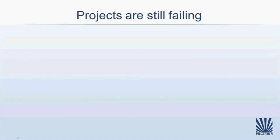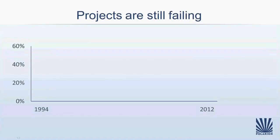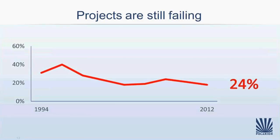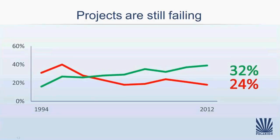Why do we need PRINCE2? Projects are currently still failing. Back around 1996, more than 40% of projects were failing — they weren't successful and needed to be stopped. Currently, about 24% of projects are still failing, while successful projects are now more than 30%, which is already really good.